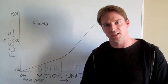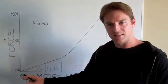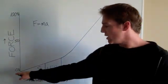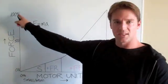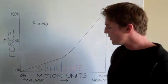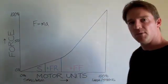So I want to go over it briefly today. I have it plotted on the board here - force is on the y-axis, motor units is on the x-axis. We have 0% force at the bottom, 100% force at the top, and for the motor units we have 0% recruitment on the left, 100% recruitment on the right.